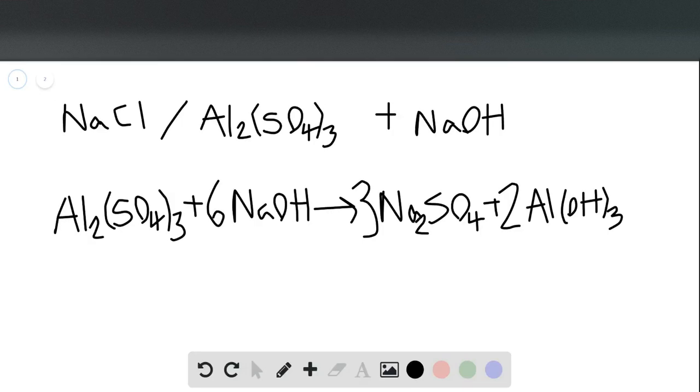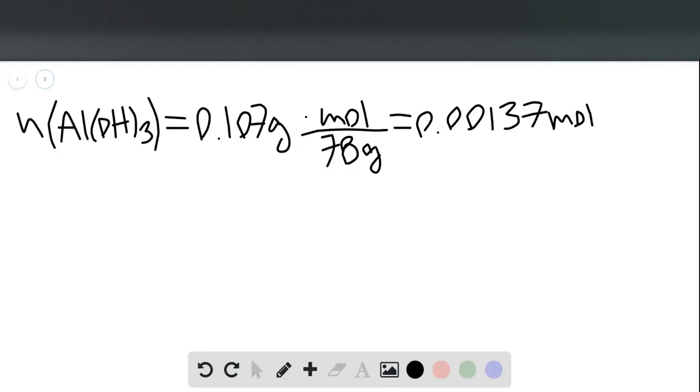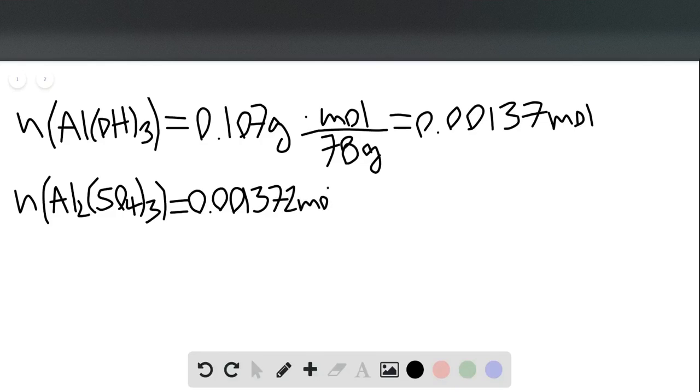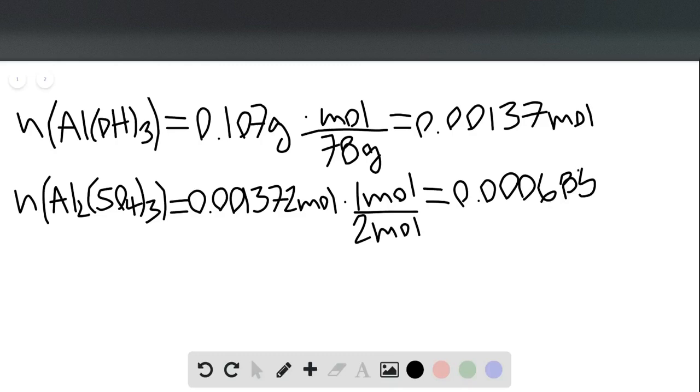Since we know that for every one mole of aluminum sulfate that we use up, we form two moles of aluminum hydroxide, we can calculate how many moles of aluminum sulfate we had in the mixture originally. So the number of moles of Al2(SO4)3 is equal to the 0.001372 moles times one mole of aluminum sulfate for every two moles of aluminum hydroxide. So that gives me 0.000686 moles. So that's how many moles of aluminum sulfate I had in my mixture originally.